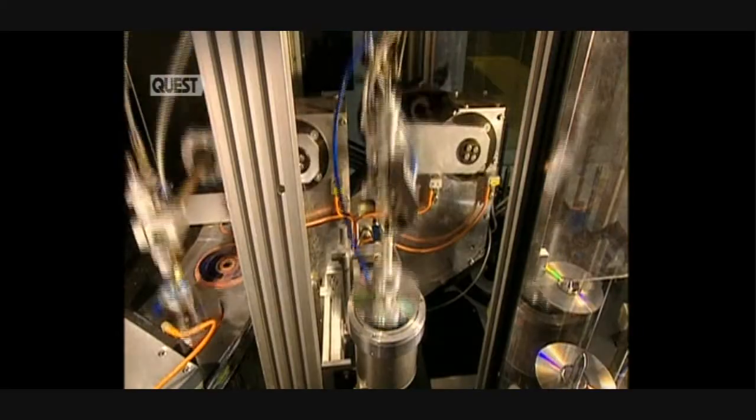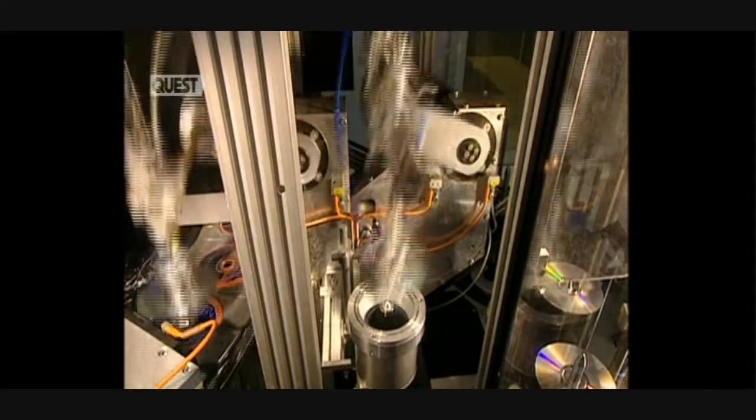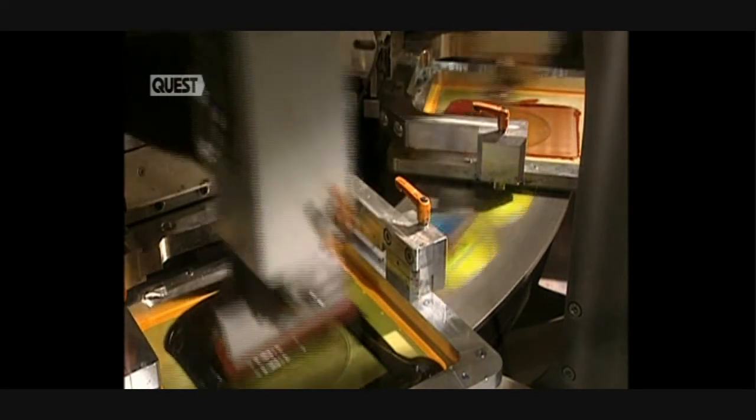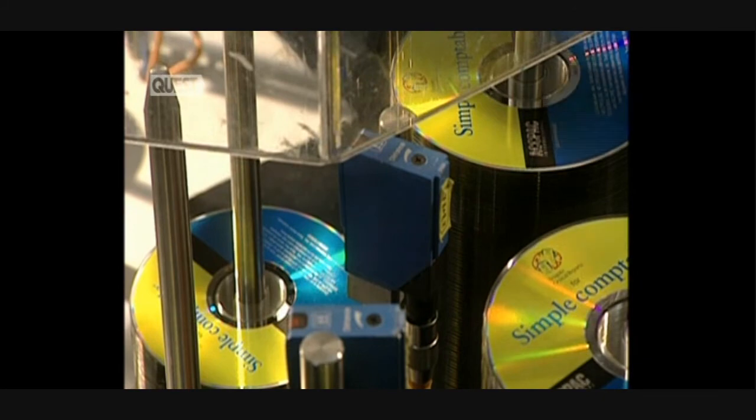And here in the pressing room, they apply the silkscreen label. 70 discs can be embellished in just 60 seconds. And once the silkscreen is completed, the finished discs leave for packaging. Simple, really.